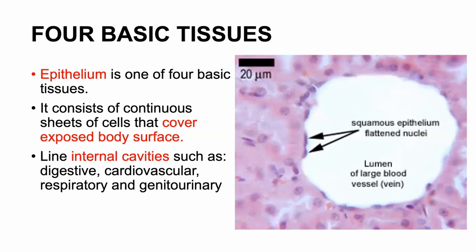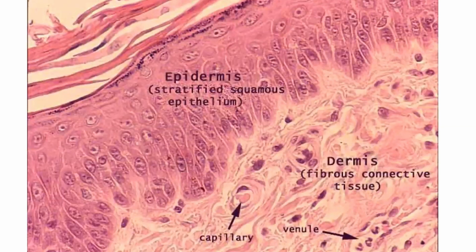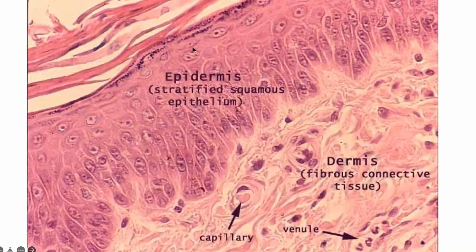Simple squamous epithelium lining blood vessels is called endothelium. Does anybody remember the embryologic origin of endothelium or blood vessels? You have endoderm, ectoderm, and mesoderm. The epidermis is an example of ectoderm. Blood vessels are most likely mesoderm. What's important is this slide is also showing a stratified epithelium — I'll explain it in detail.